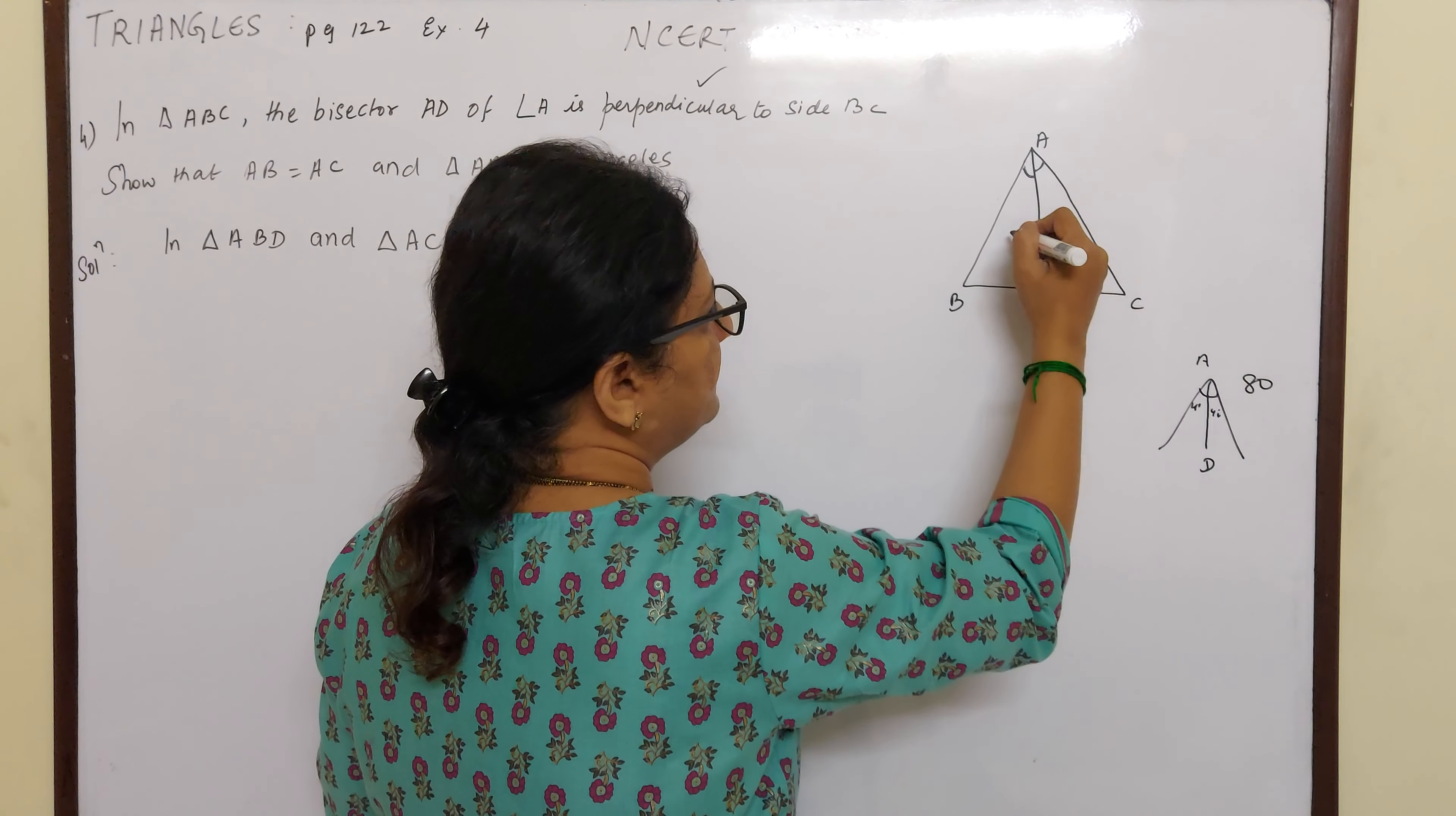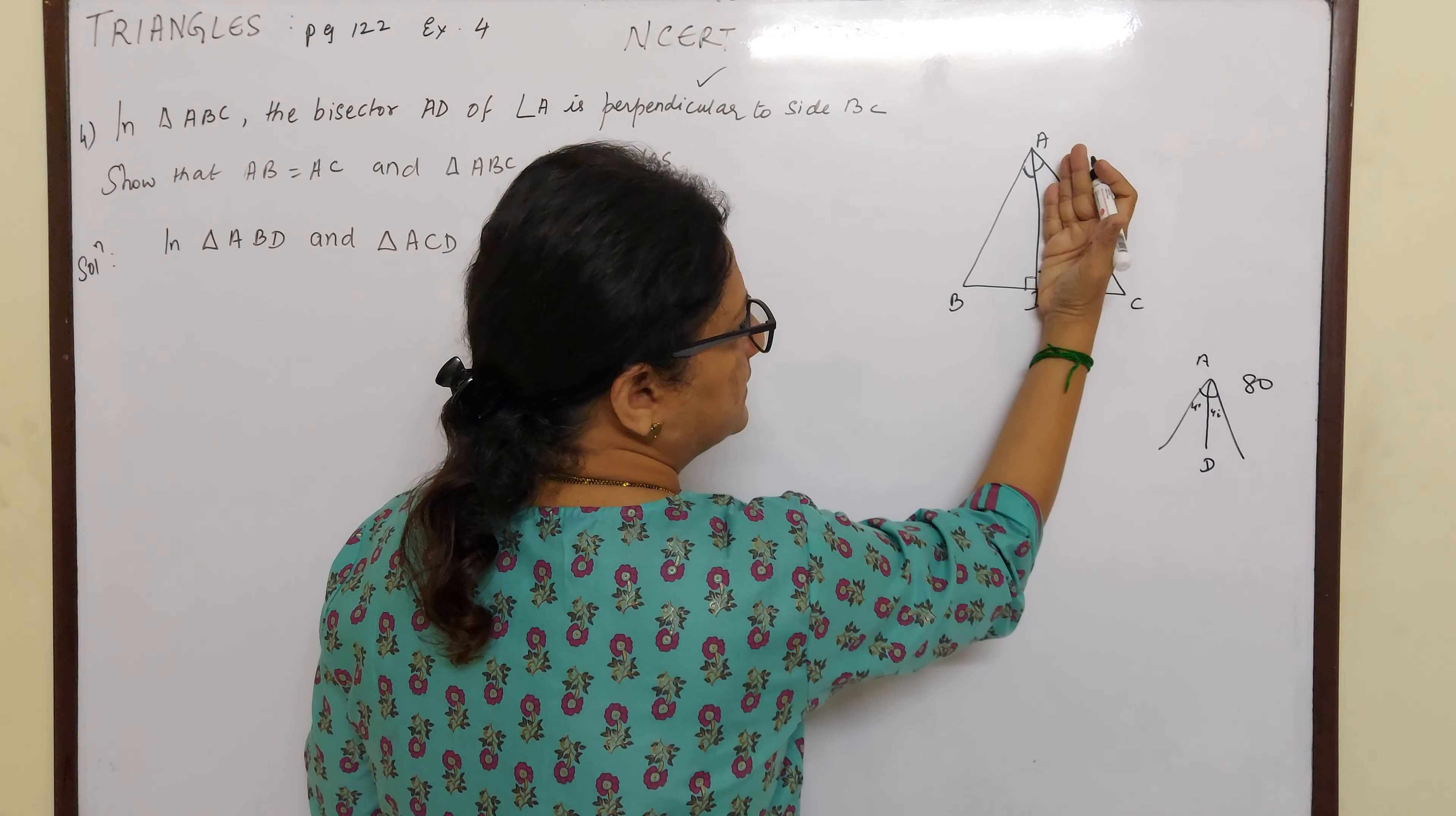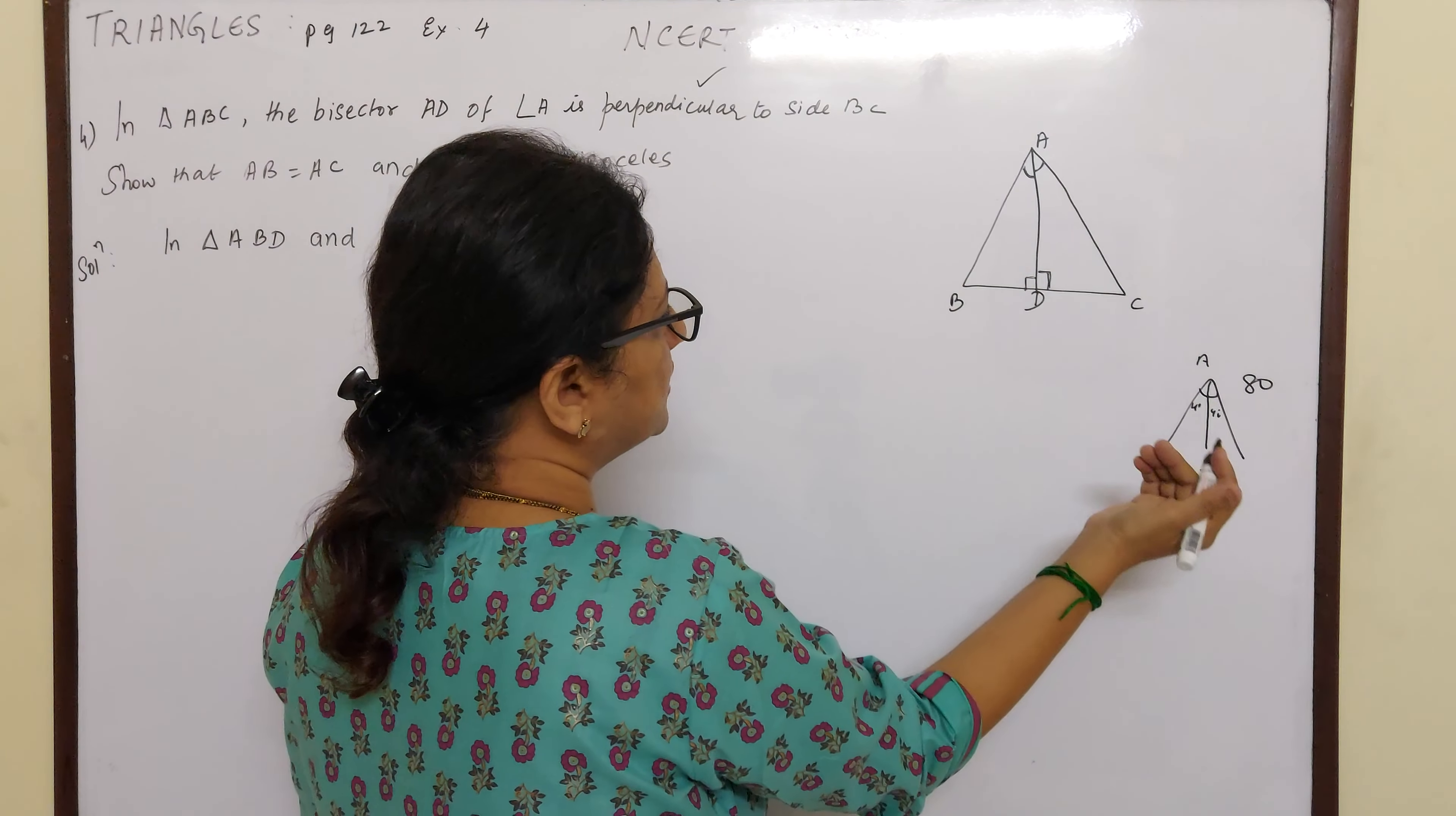So with this given information, we will take triangle ABD, this triangle, and triangle ADC. So what are the points we know?